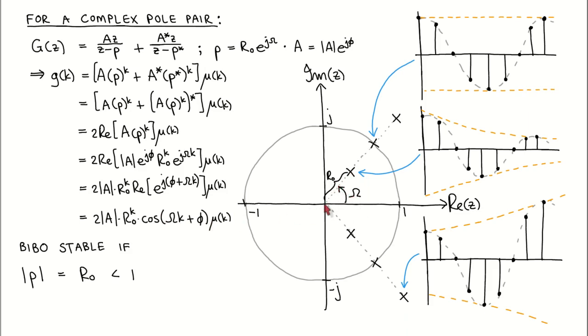If the distance of the pole from the origin of the z-plane is less than 1, then the resulting impulse response is an exponentially decaying sinusoidal signal.